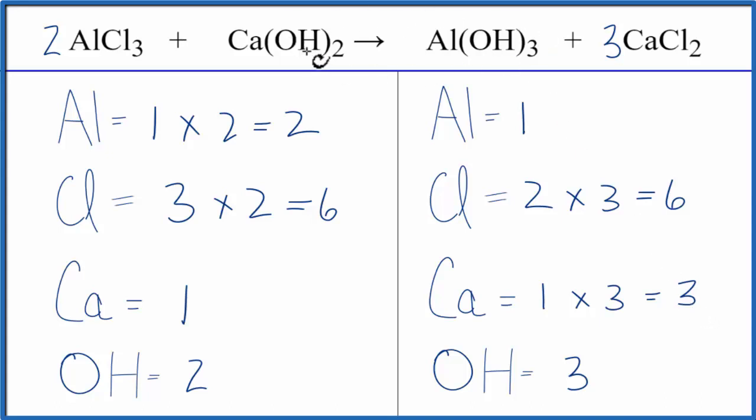We still have a problem here with the hydroxides. We have this odd number and an even number. Let's put a two in front of the aluminum hydroxide, see what that does. So now we have the three hydroxides times the two, that will give us six. And then one times the two for the aluminum, and that actually balances the aluminums for us.